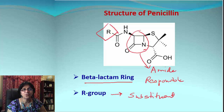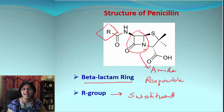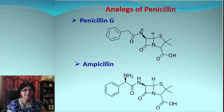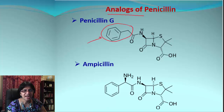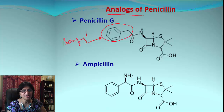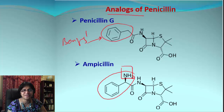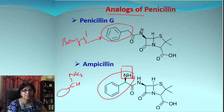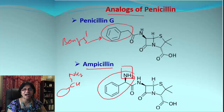Also focus on the R group — this R group can be any substituent. There are a variety of antibiotics developed where the R group is changed, and that makes a big family of penicillin group antibiotics. For example, penicillin G has a benzyl group as an R group, and ampicillin has an extra amino group attached to that benzyl, so it is CH-NH2.